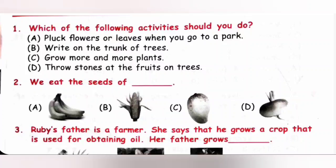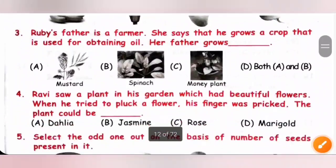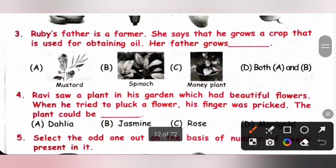Third one, Ruby's father is a farmer. She says that he grows a crop that is used for obtaining oil. Her father grows option A: mustard, B: spinach, C: money plant. We know mustard oil is obtained from mustard seed. So her father grows mustard. Option A is the correct answer.